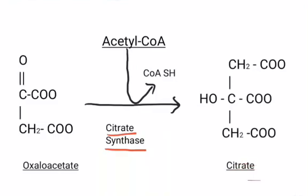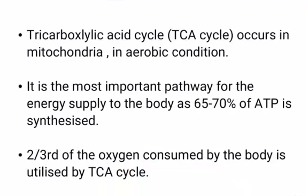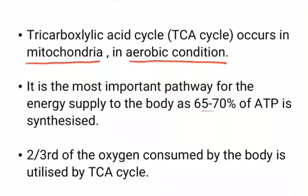Now let us look at the important points of the TCA cycle. The tricarboxylic acid cycle occurs in the mitochondria under aerobic conditions. It is the most important pathway for energy supply to the body, as 65–70% of ATP is synthesized through it. Two-thirds of the oxygen consumed by the body is utilized by the TCA cycle.